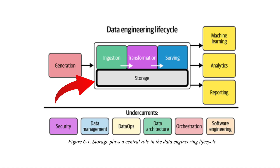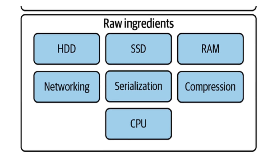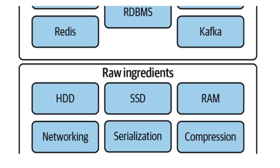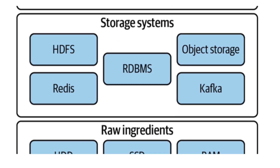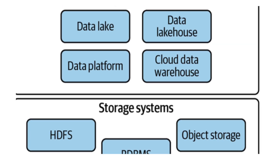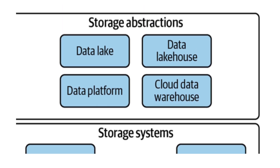After you understand data generation, you will learn about data storage. This starts with basic hardware-level storage such as SSD, HDD, and RAM, then it talks about one level above such as file storage, block storage, object storage, and the Hadoop file system, and then one more level above such as data warehouse, data lake, lakehouse and many more.